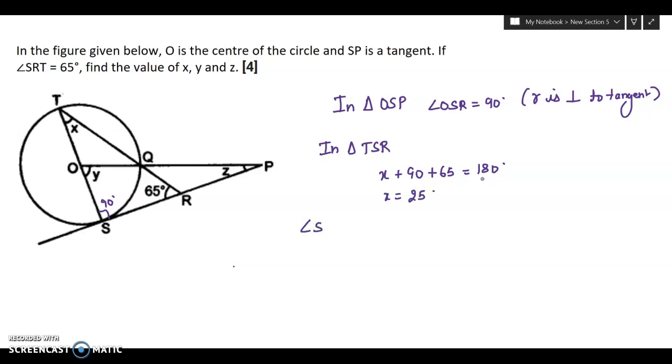Now if you see angle SOQ, it is equal to 2 of angle STR. This is SOQ. That is why it is 2 times of STR. What is the reason? Angle at center is equal to 2 times angle at circumference. Angle SOQ is equal to 2 into 25. That means y is equal to 50 degrees.